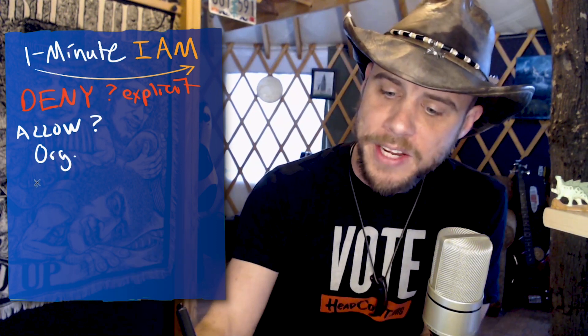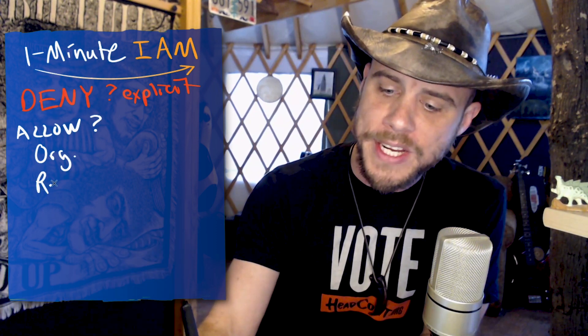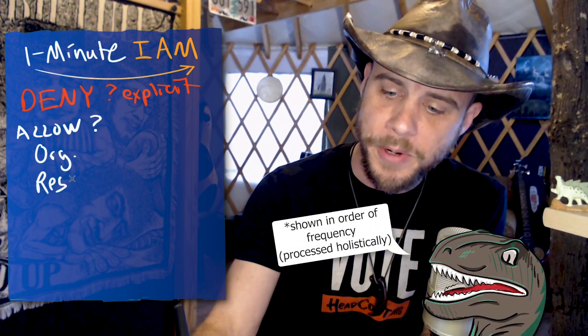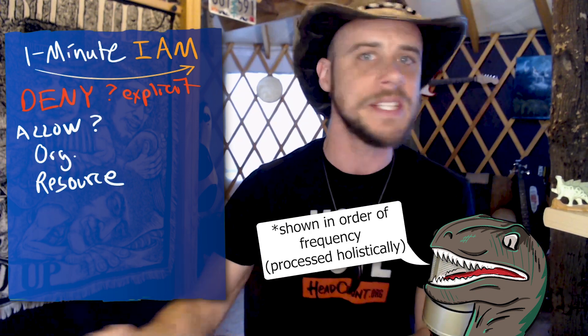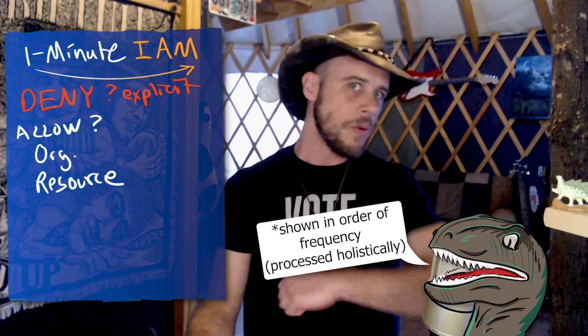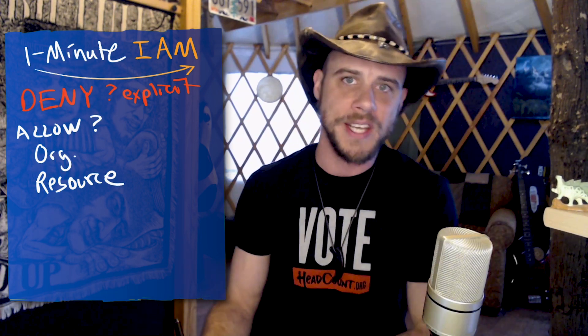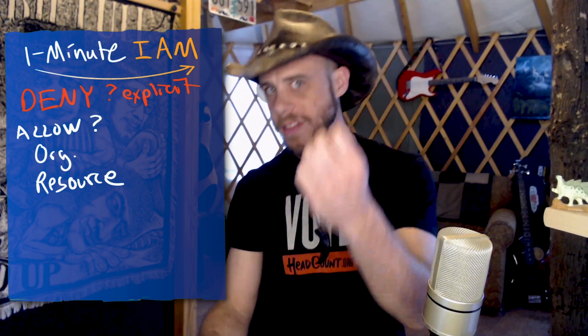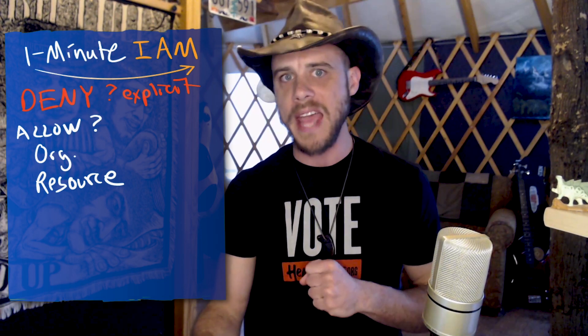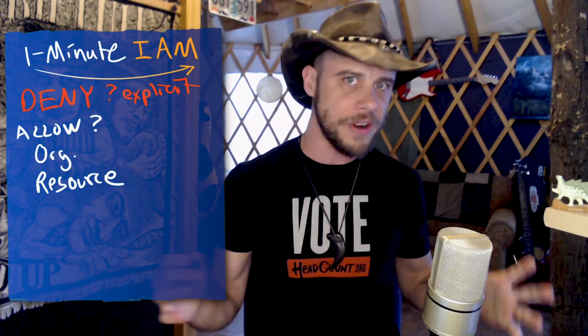Moving on down, we look for resource-based permissions. This could be on the bucket, on the topic, or whatever the resource is that you're accessing. If it has a policy attached to it, AWS will check there next to see whether or not there are any allows.